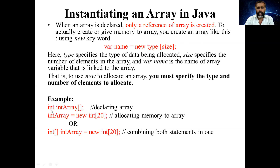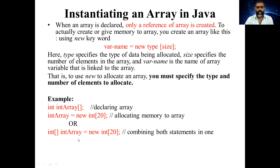For example: first declare 'int intArray[]' — this is the declaration statement. Then for allocating memory: 'intArray = new int[20]' — this instantiates the array by allocating memory for 20 elements. These two statements can be combined into a single statement: 'int[] intArray = new int[20]'.